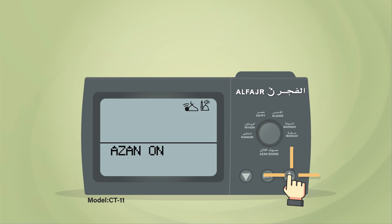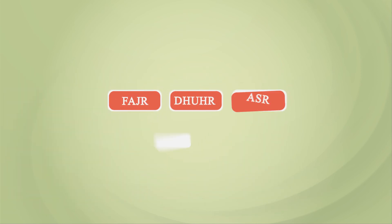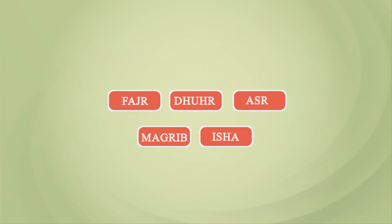Then press this button to return to the main screen. In this case, the clock will play all Adhans except Dhuhr and Isha.